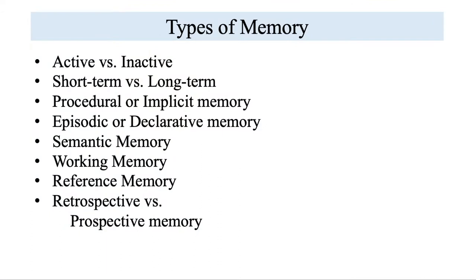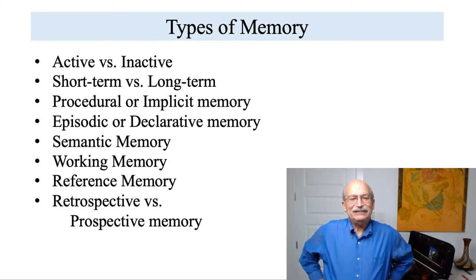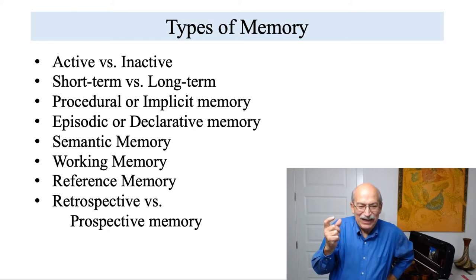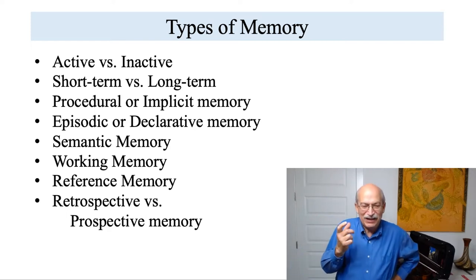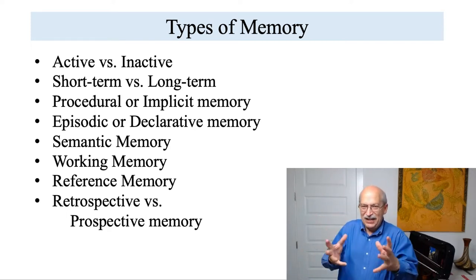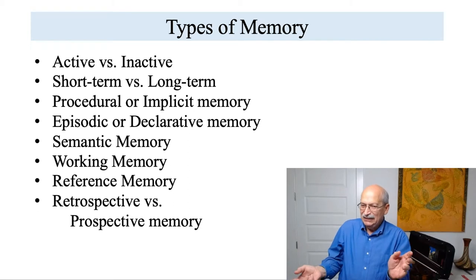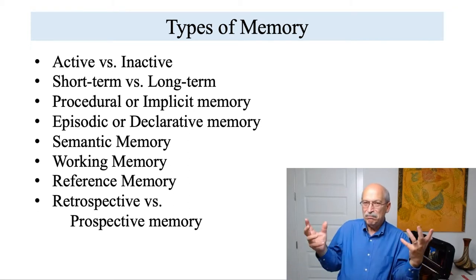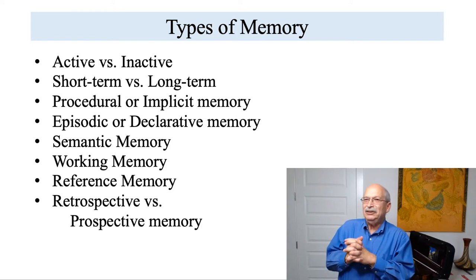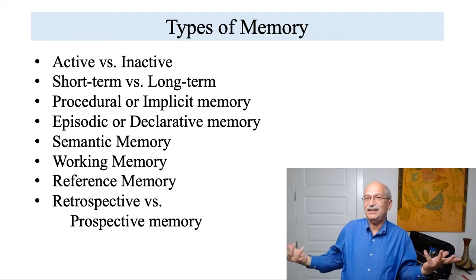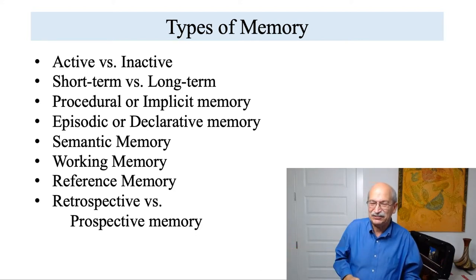Top on the list is active versus inactive memory. Active memory is memory that you actually use at the time. We remember a lot of things that we don't actually use or think about at a given moment — that's inactive memory. You remember your birthday that you had last year, but unless someone asks you about it, you're not going to think about that at the store picking out groceries. So that's in an inactive state.